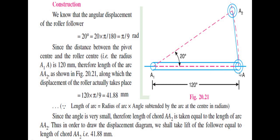The distance A to A1 is 120 mm. Therefore, the length of arc A1 to A2, which represents the oscillation of the roller, is the lift of the follower. The lift is calculated as: length of arc = radius × angle subtended by the arc = 120 × π/9 = 41.88 mm. This is the lift of the follower.